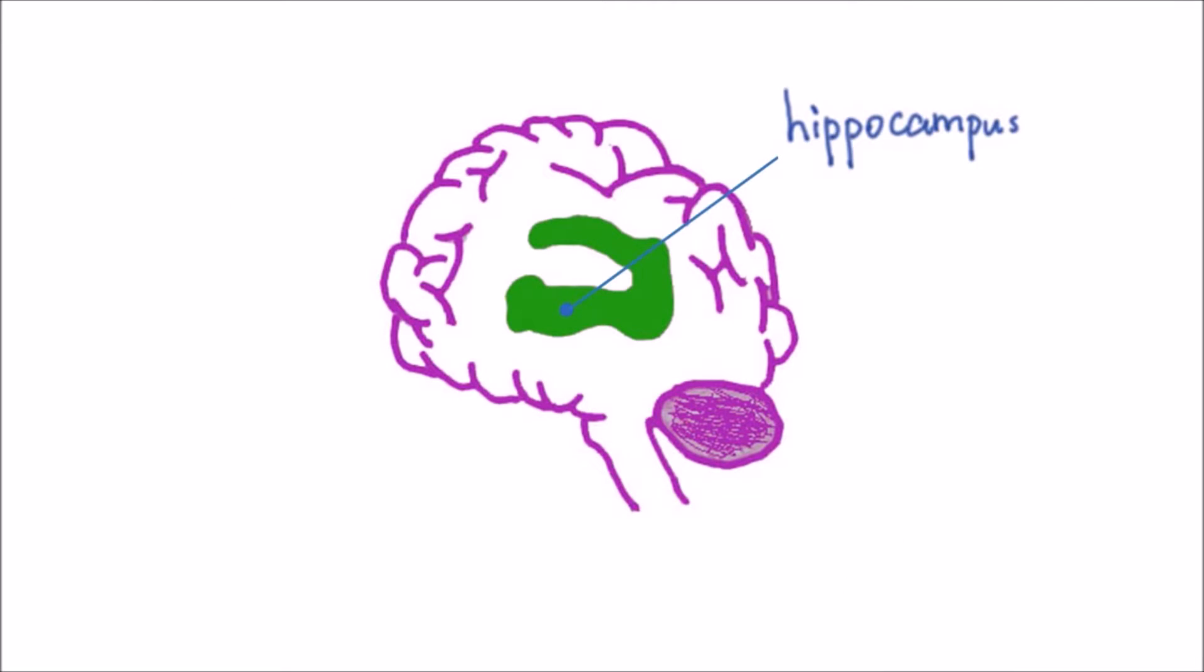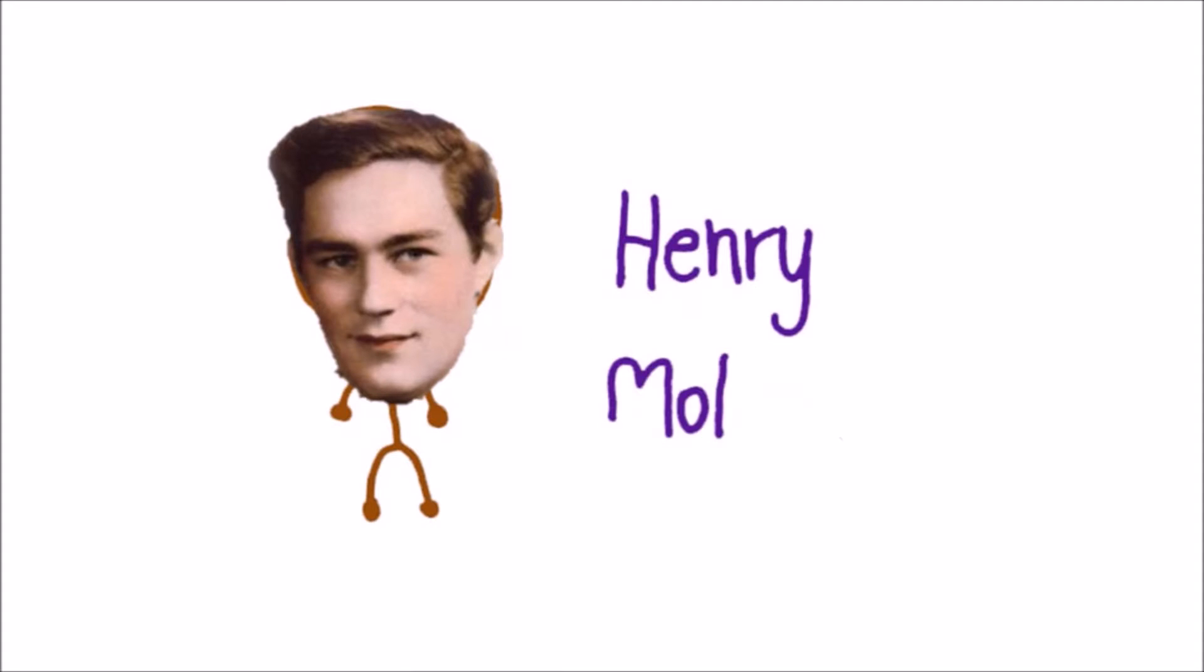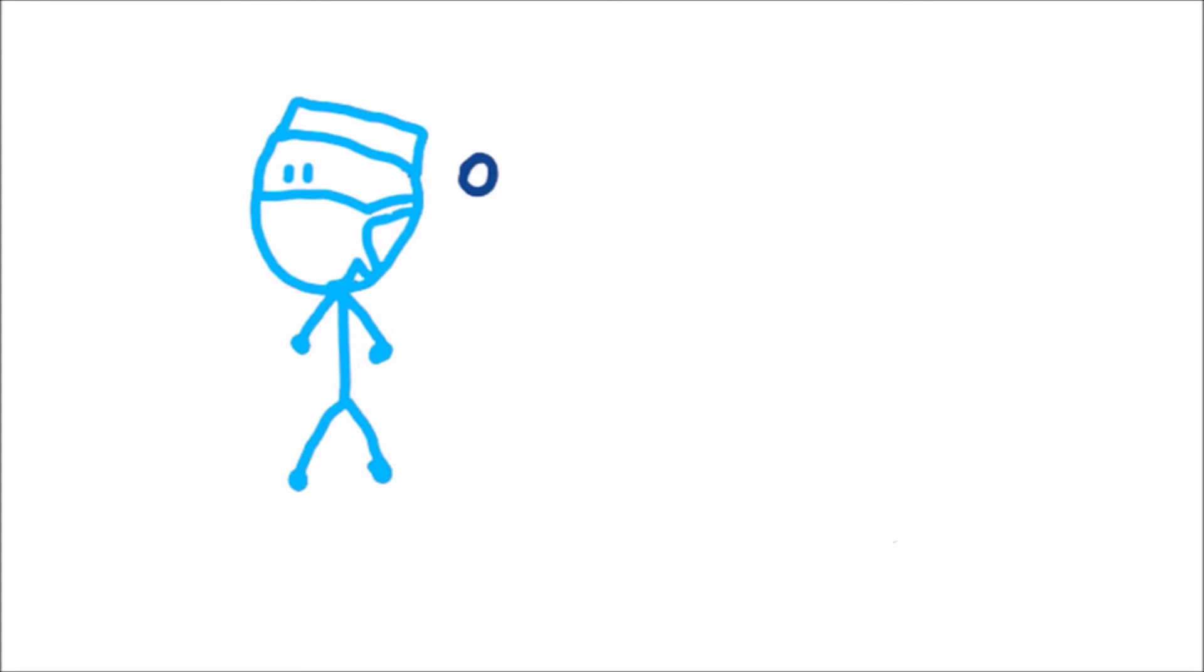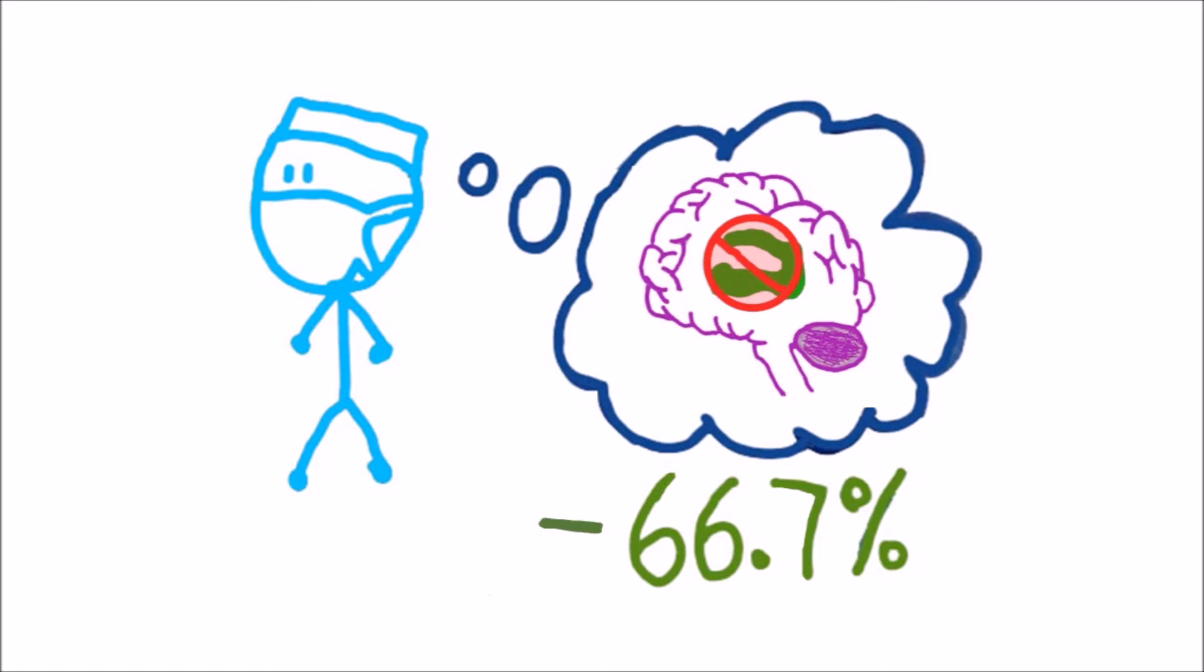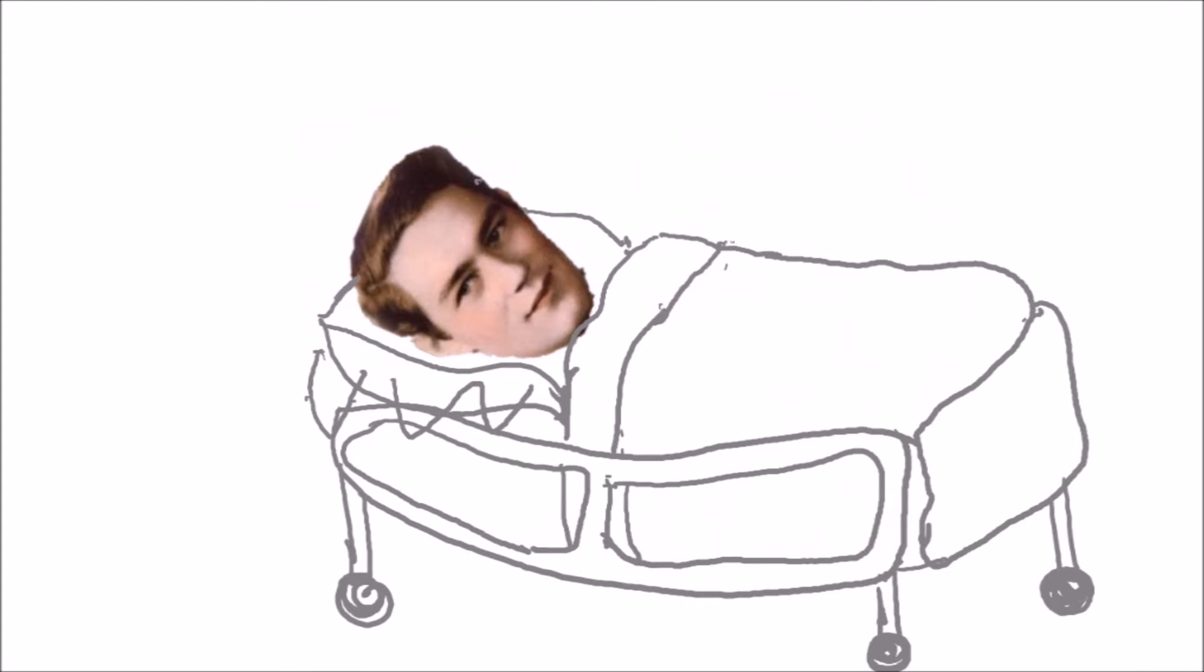So, how did we get to know about its importance in memory formation? Back in the 1950s, a man known as Henry Mollison suffered from seizures. A surgeon suggested a risky procedure which would take out most of his hippocampi. That, in theory, would stop his seizures. Henry went into surgery, and his seizures did become more controlled.